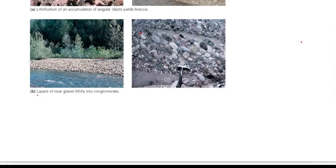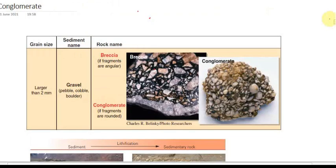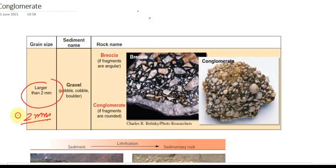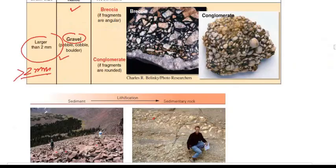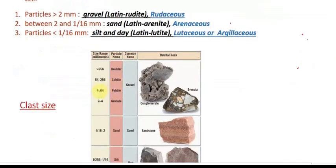First of all, let's discuss what conglomerate is. In the Wentworth scale, if fragments are larger than 2 mm, we call the sediment gravel. Gravel is further classified into pebble, cobble, and boulder. Pebble is 4 to 64 mm in size; cobble is slightly bigger; boulder is the biggest gravel; and granule is the smallest gravel.